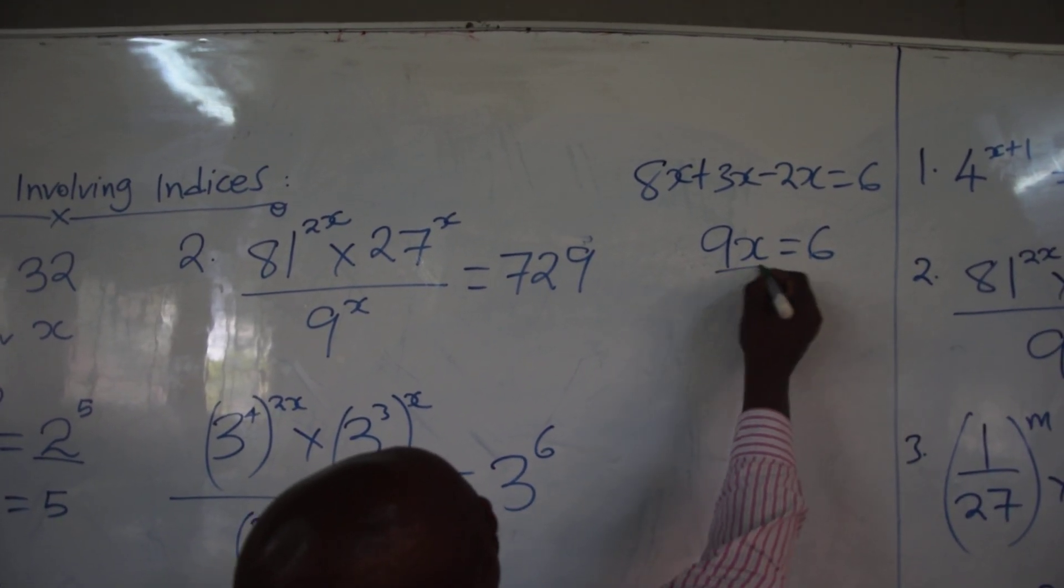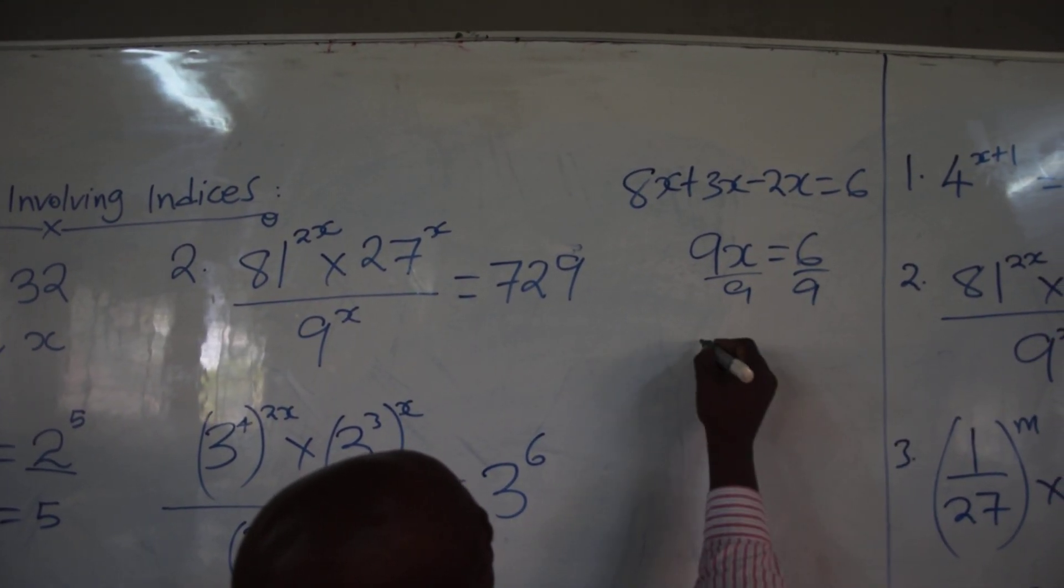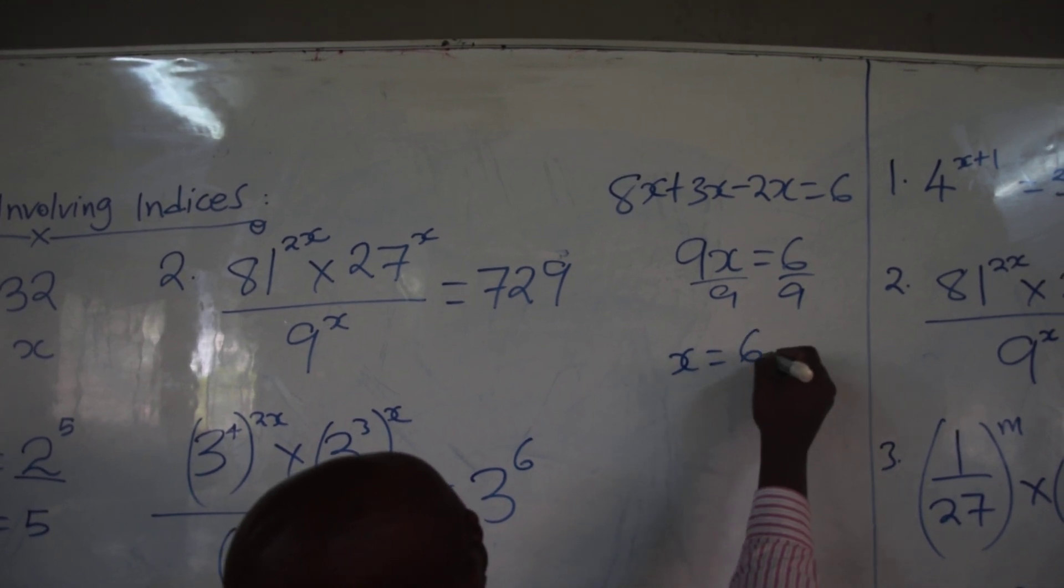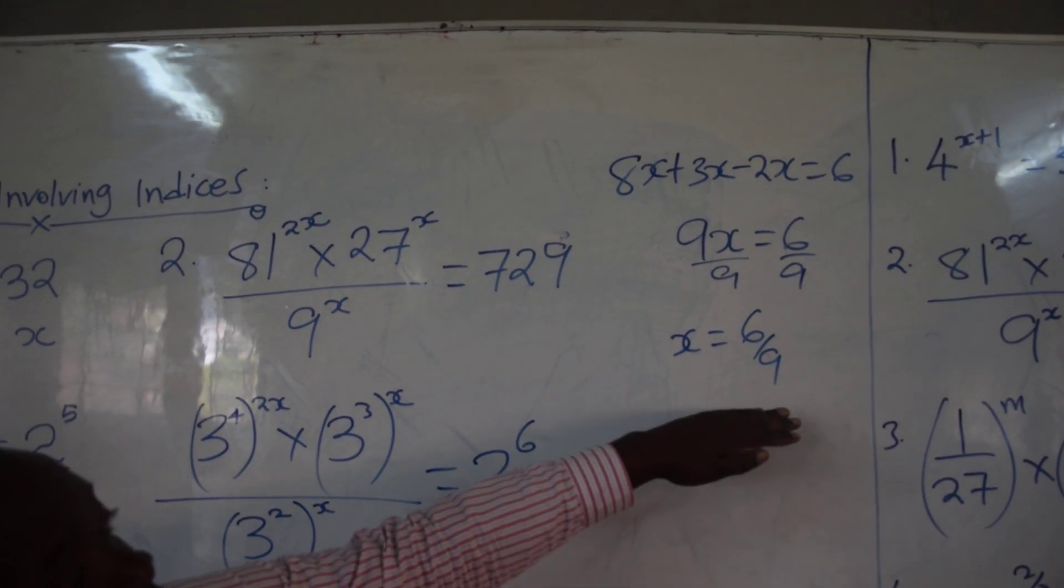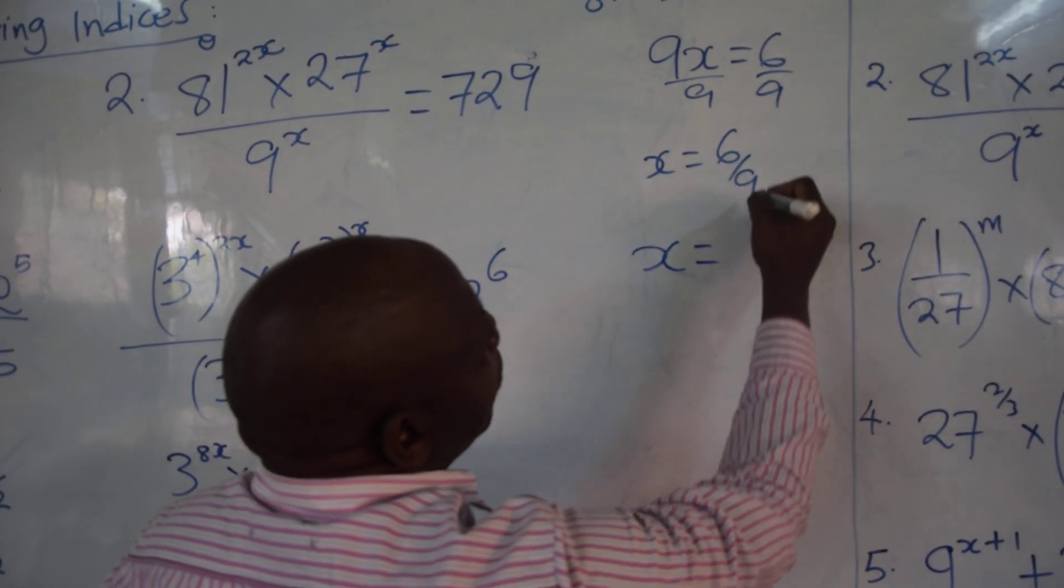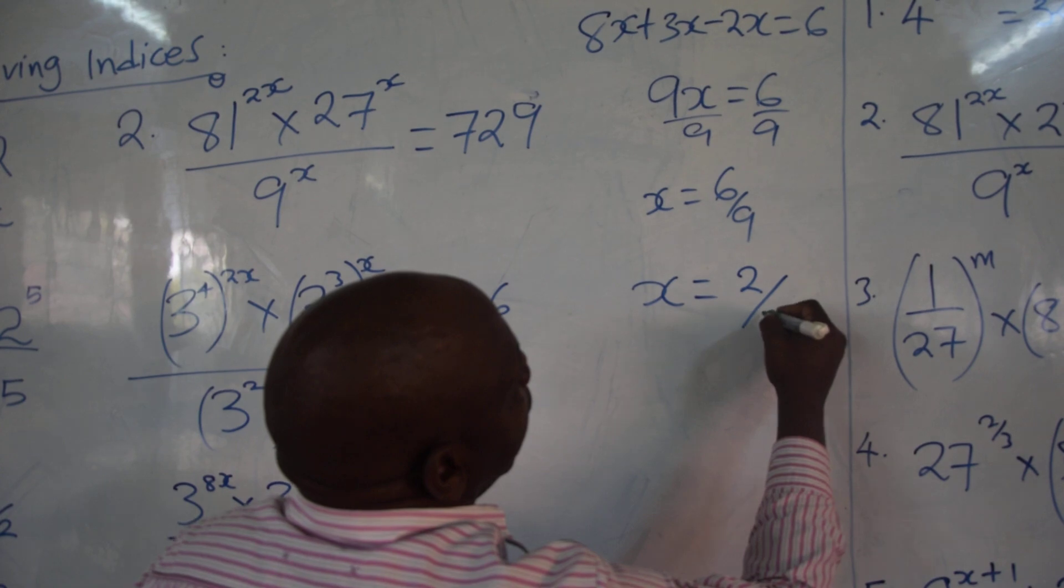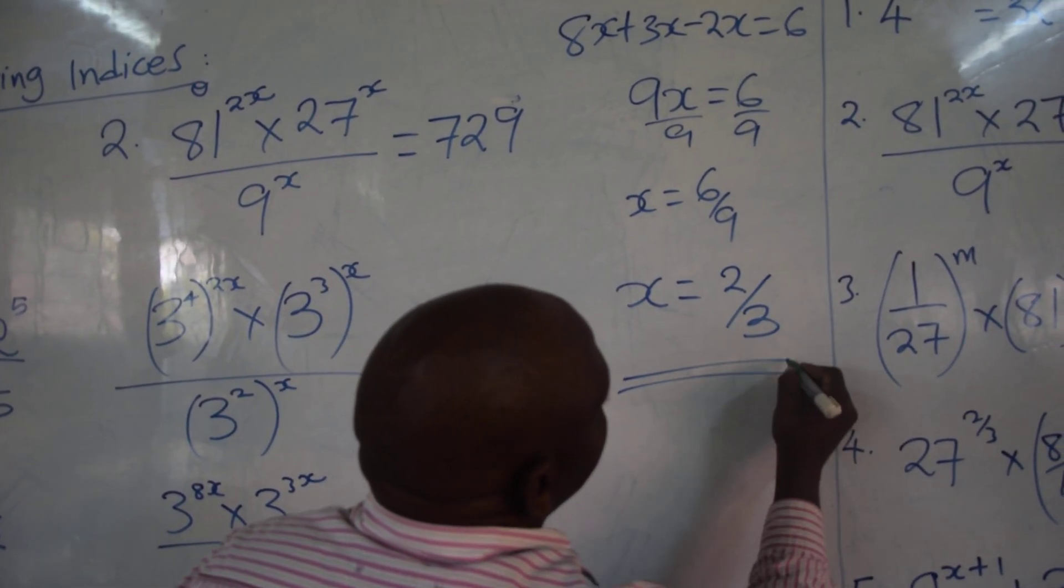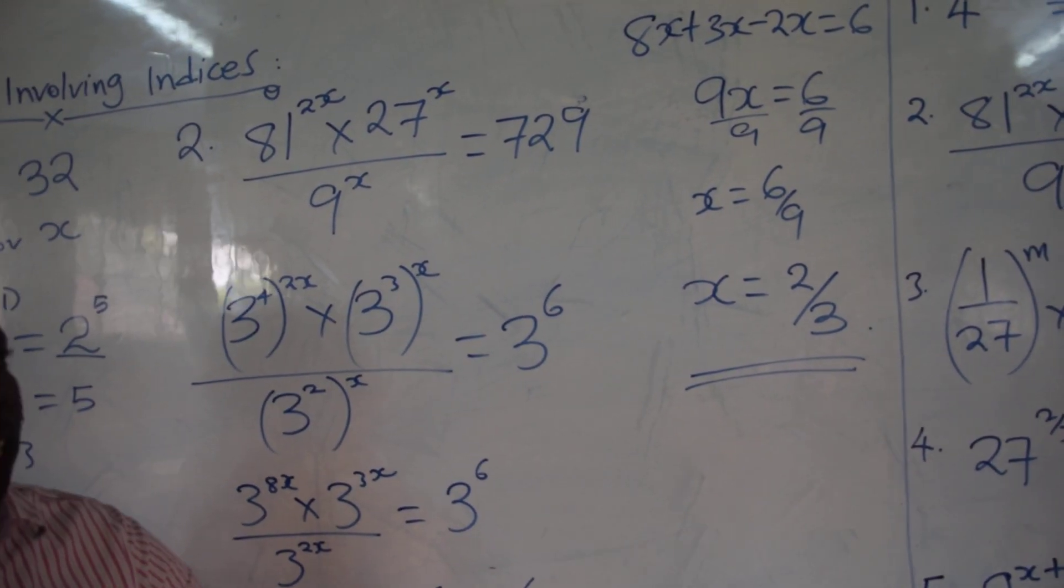And therefore, to get x, divide by 9, x equals to 6 over 9. And then, this answer must be simplified to get x equals to 2 over 3, and that will be the value for x for that particular sum.